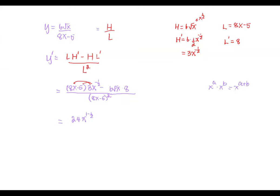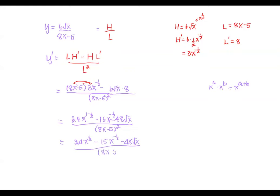In this case, x means x to the power 1, so we combine 1 and negative 1 half for the product of 8x and 3x to the negative 1 half, giving 24 times x to the power 1 minus 1 half. The next term is negative 5 times 3, that's 15, x to the negative 1 half, minus 6 square root x times 8, simplified to 48 square root x, all divided by the quantity 8x minus 5 squared. So the numerator is 24x to the positive 1 half minus 15x to the negative 1 half minus 48 square root x.